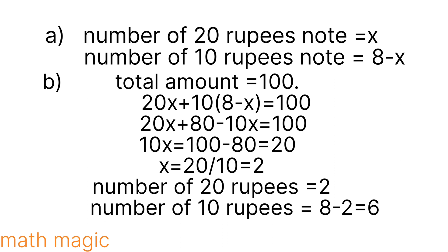Now we will find the total amount of 100. Total amount is equal to 100. 20x plus 10 into (8 minus x) is equal to 100.